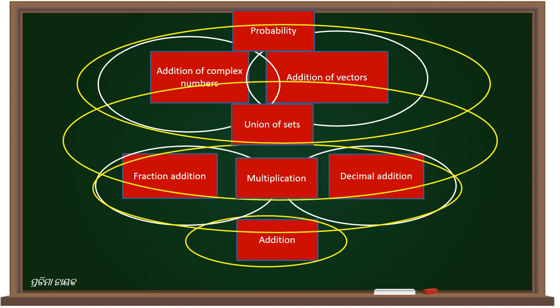Then union of sets, addition of complex numbers is also based on addition, addition of vectors, and the probability either or is also a concept of union of sets. It can be revisited. So teachers should understand how much deep I should go so that my students will understand the concept better or they can revisit the concept if they have forgotten it.